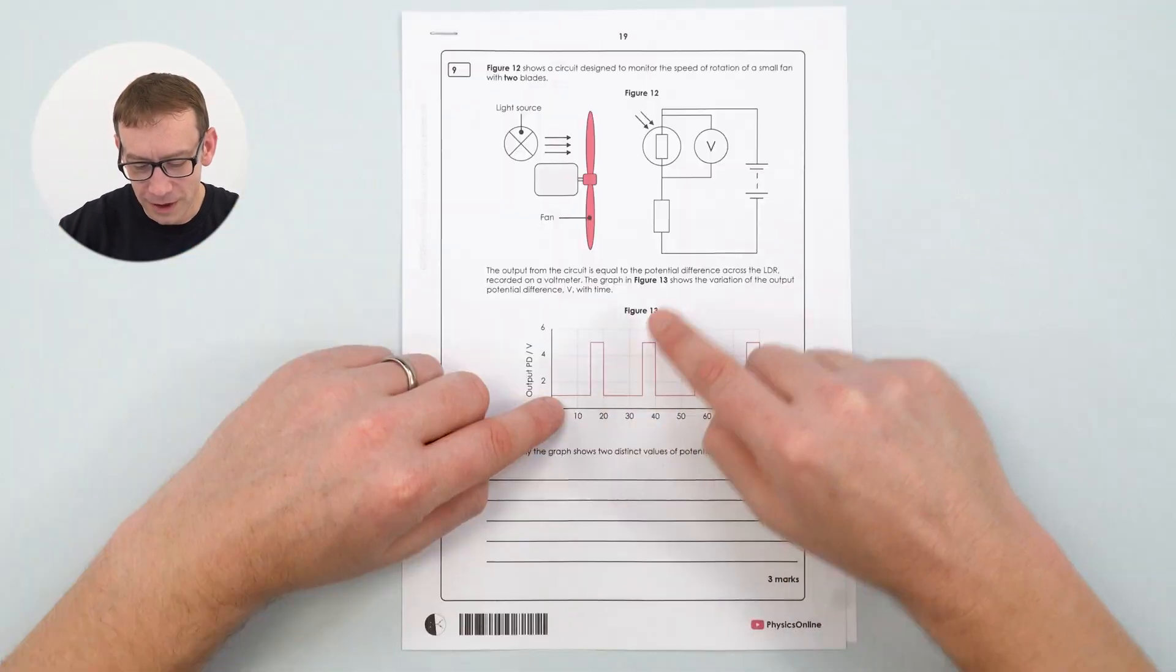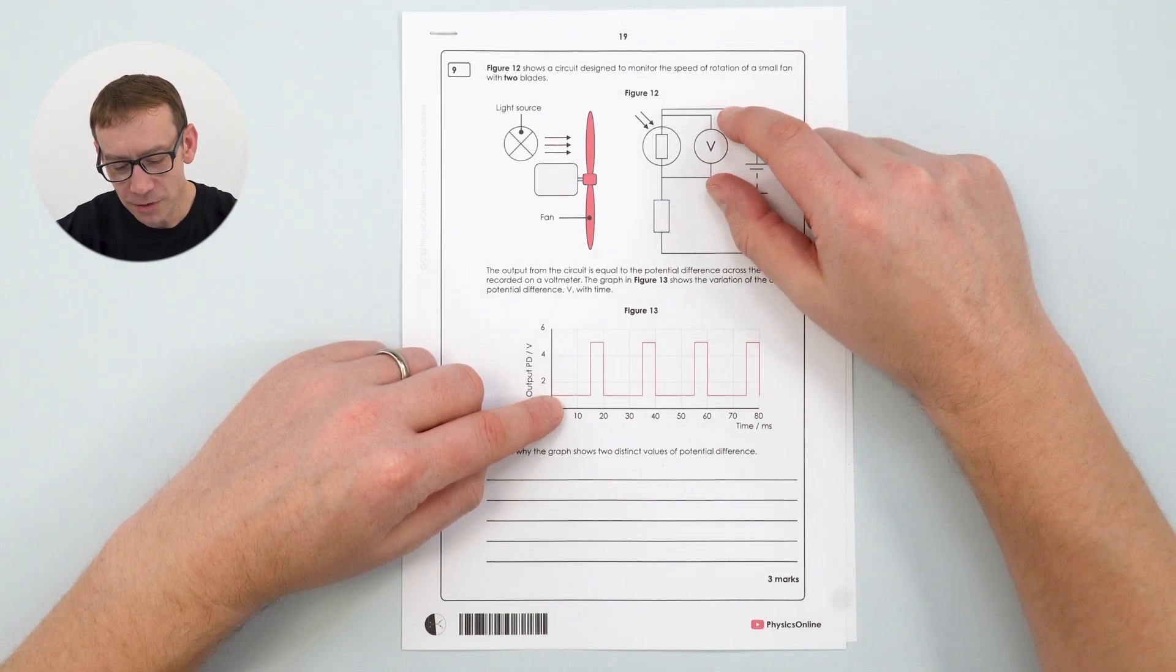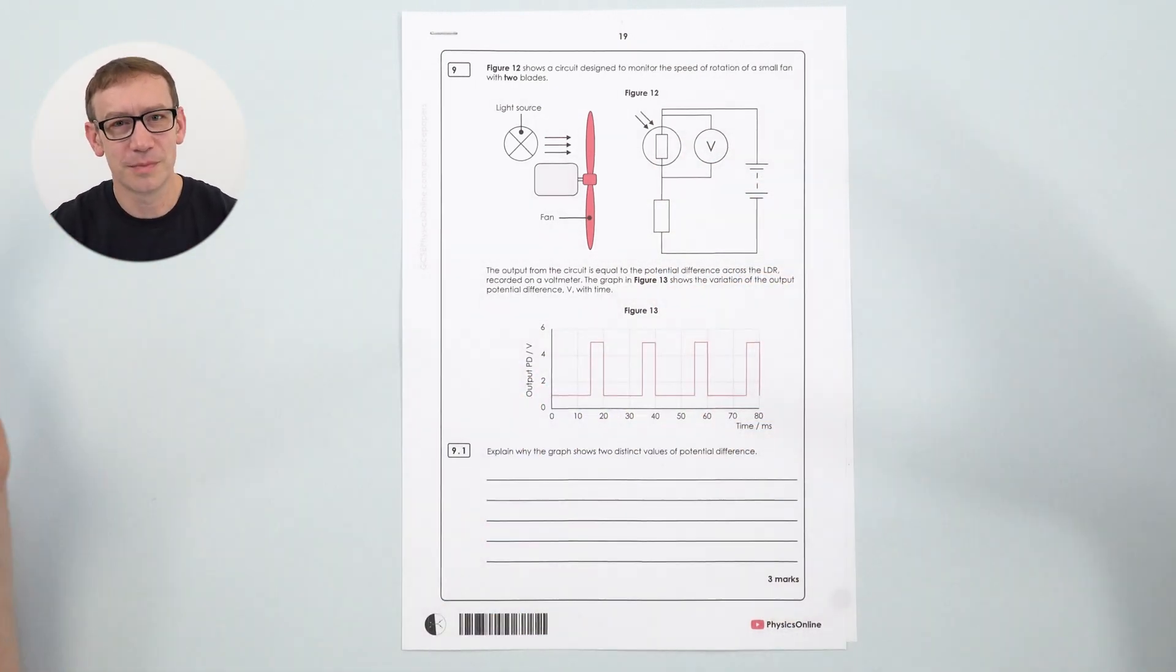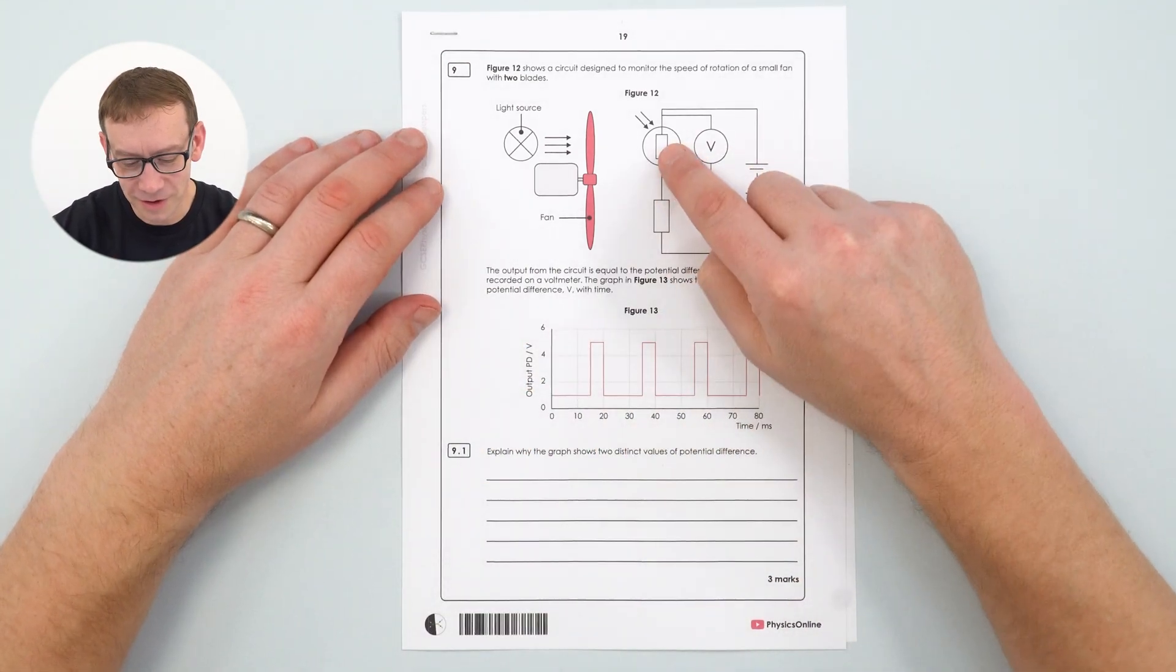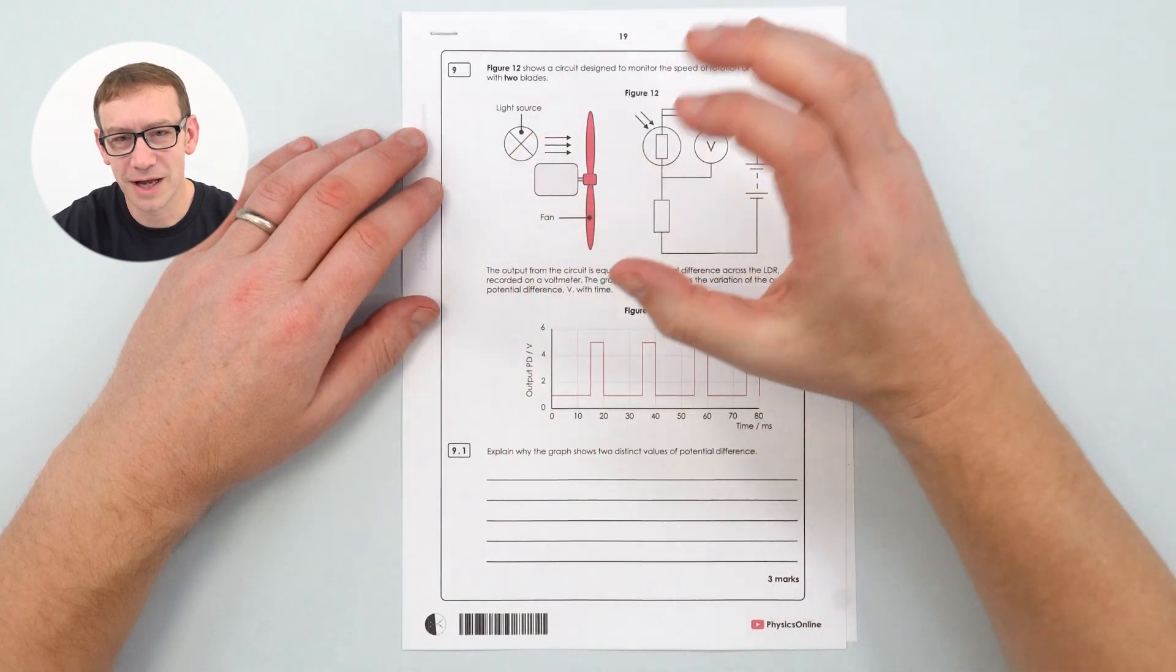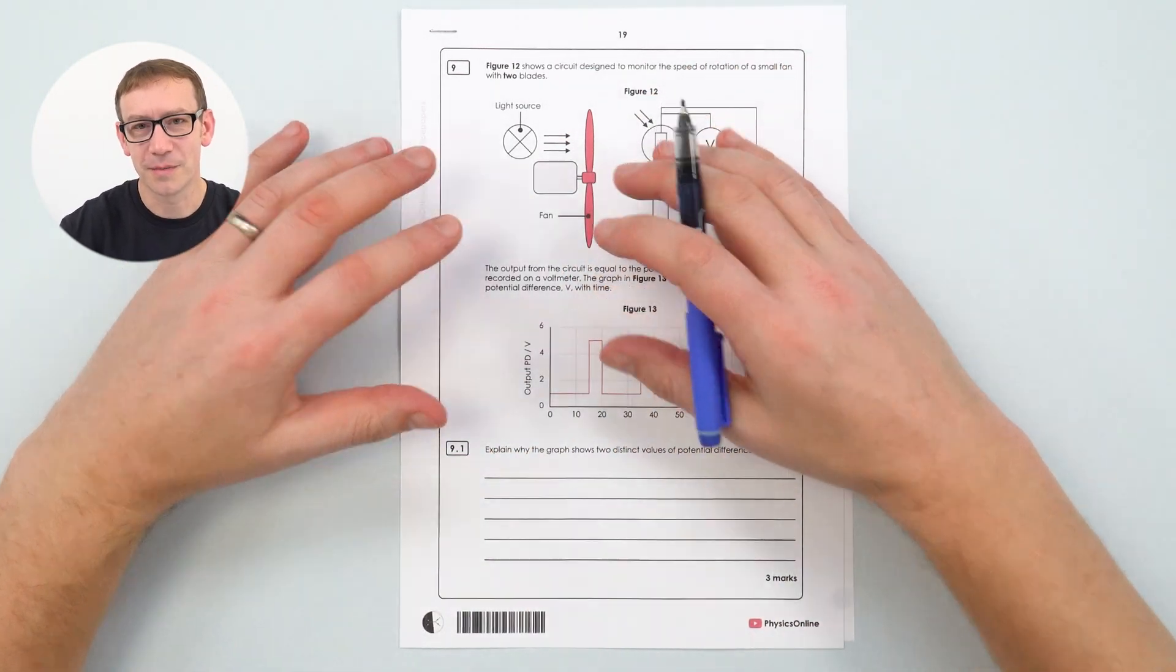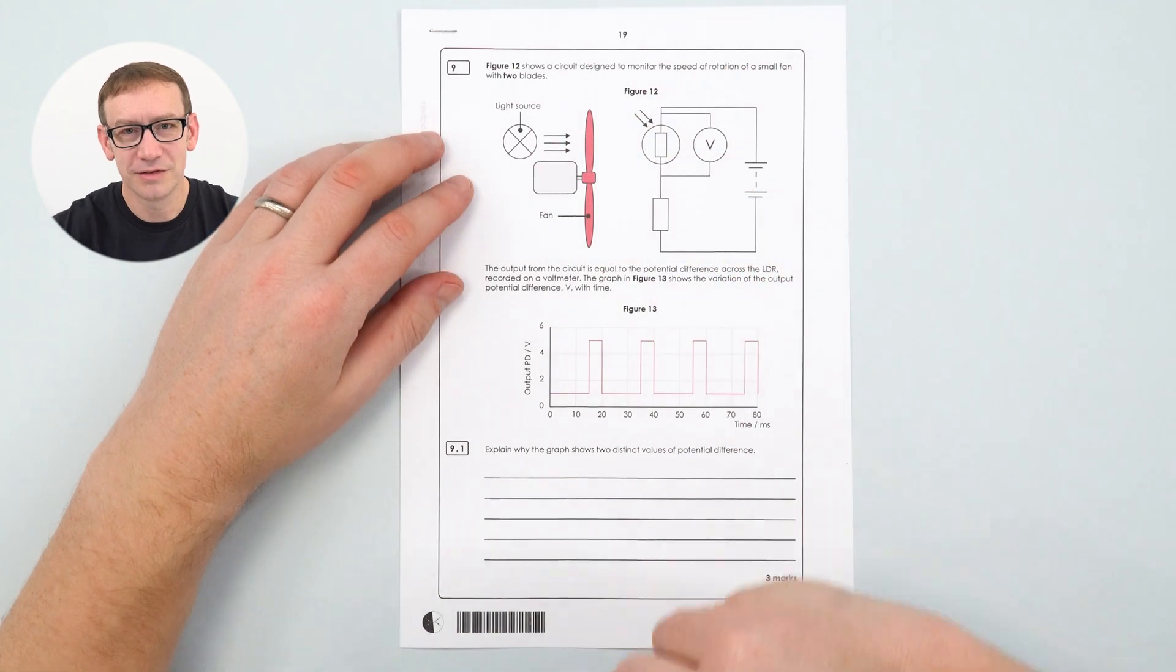Well this graph is related to that potential difference which is measured by this voltmeter which is measuring the potential difference across this component. So this component is a light dependent resistor. Its resistance depends on the light intensity that it's actually receiving and that's going to depend upon if that fan blade is blocking out the light or if it's letting the light through. So a way that you could answer this is that you could say that first of all what's actually happening in this diagram. So this is a static image but we know in reality something is going to be moving.